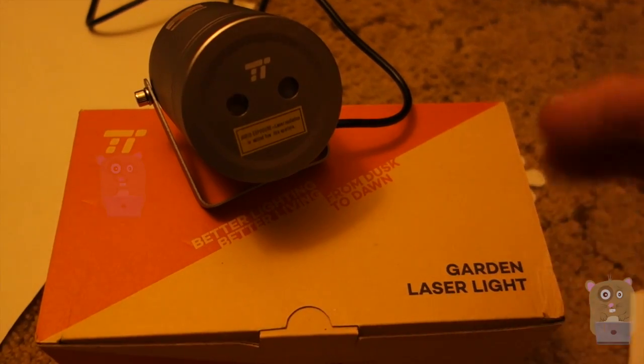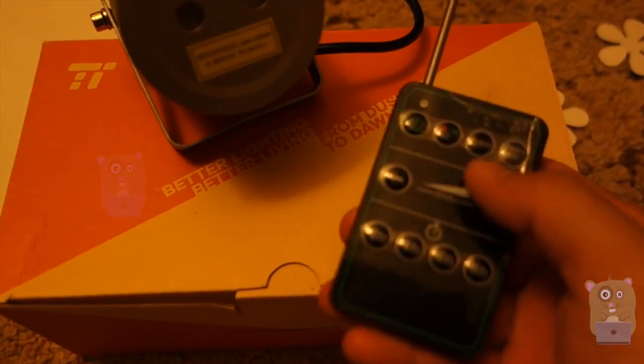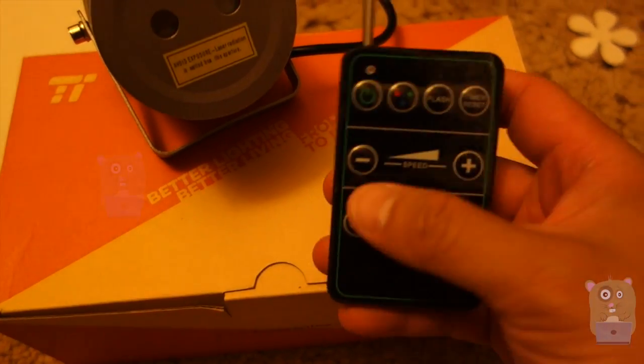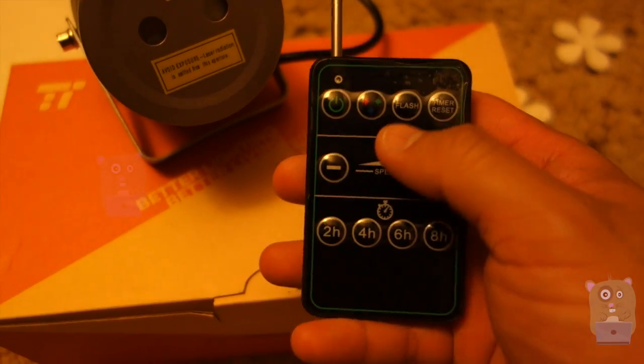This item came with a few things in the box: the ground spike, the remote control, and the remote control is powered by two AAA batteries, which were provided.